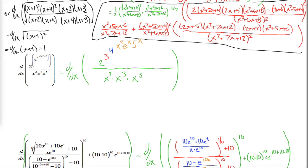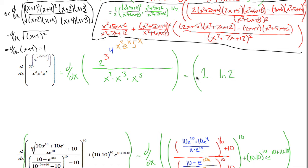Another absurd problem. The first thing I see is a quotient rule — something divided by something. Using f prime g minus g prime f divided by g squared. The derivative of the top is the hardest part — chain rule inside chain rule inside chain rule. The outermost function is 2 raised to some power. If it were just 2 to the x, the derivative would be 2 to the x times natural log of 2. But it's 2 to the power of 3 to the 4 to the x squared e to the x times 5 to the x.